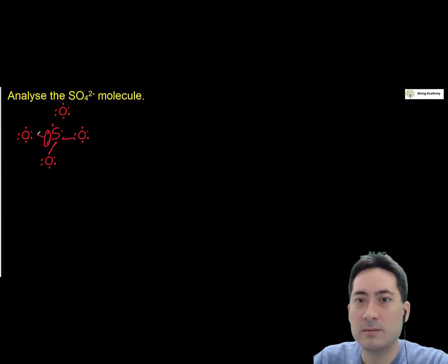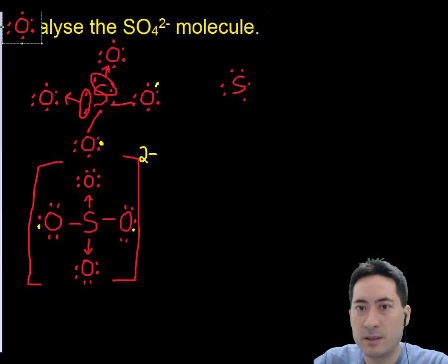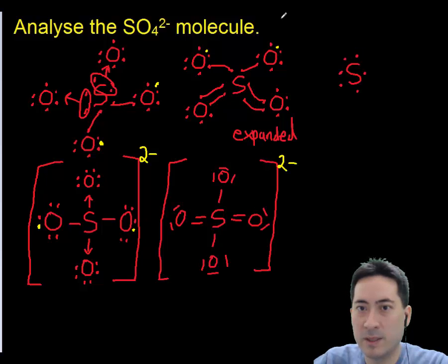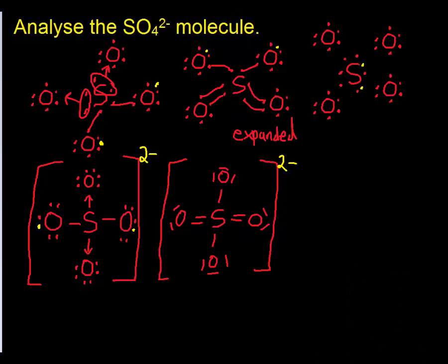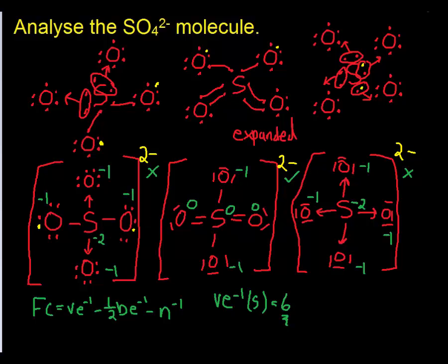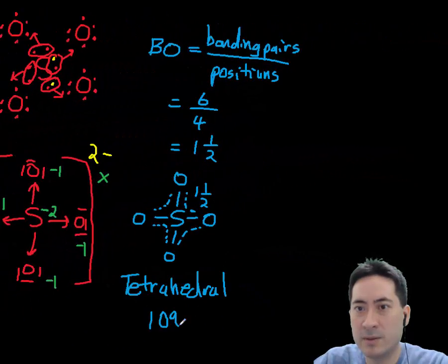Let's look at the sulfate molecule. We're not quite sure on what that actually looks like. So these are some ideas that we came up with in class. And what we need to do to work out which one the correct one is, is do the formal charge on all of those. And so what we come up with is the middle one has the correct formal charge. We can do the bond order and the resonance there to get the structure. So we know it's tetrahedral 109.5.